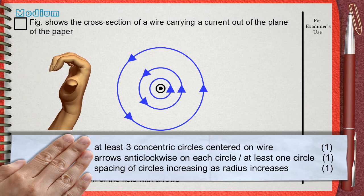The second mark is for arrows shown anti-clockwise on each circle. Or you can show arrows in only one circle. This is the second mark.